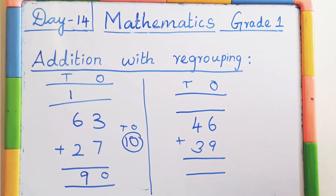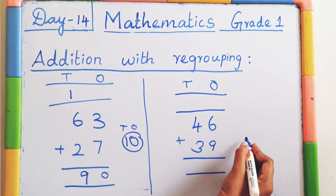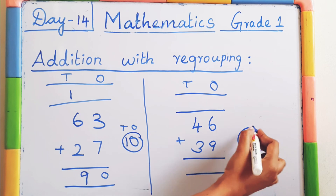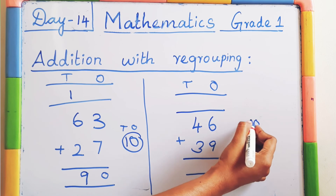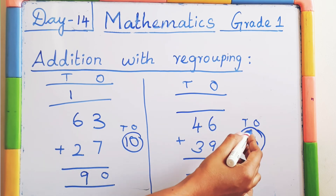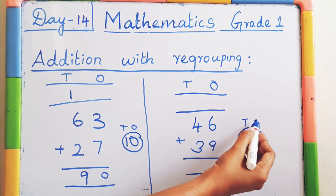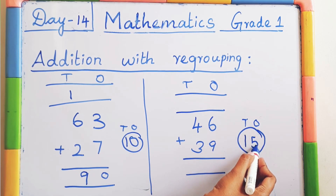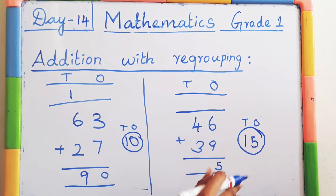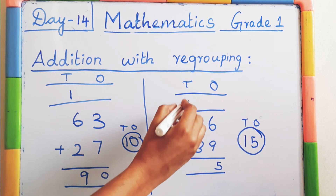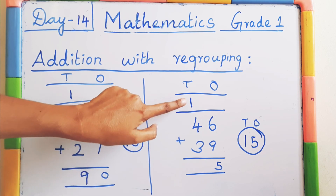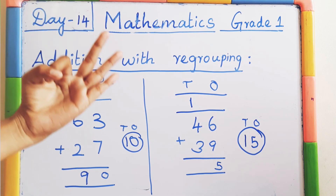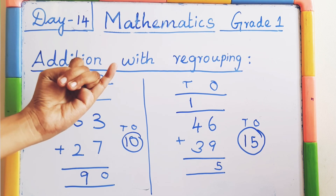Write ones and tens for 15. In the ones place the number is 5, so write 5 in the ones place. In the tens place the number is 1, so carry over to the tens place. Immediately add this 1 to the 4: 4 plus 1 equals 5. Keep 5 in the mind, 3 on the finger. After 5: 6, 7, 8. Very good.